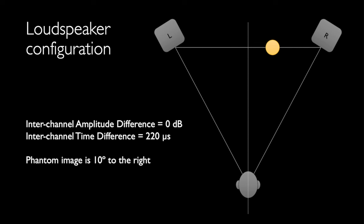Interchannel delay panning 10 degrees right: amplitude difference zero, left channel delayed by 220 microseconds. Image should appear 10 degrees to the right of center, one-third of the distance to the right loudspeaker. Interchannel delay panning 20 degrees right: amplitude difference zero, left channel delayed by 440 microseconds. Image should appear 20 degrees to the right, two-thirds of the distance to the right loudspeaker. Interchannel delay panning 30 degrees right: amplitude difference zero, left channel delayed by 1.12 milliseconds. The image should appear 30 degrees to the right of center, in the right loudspeaker.